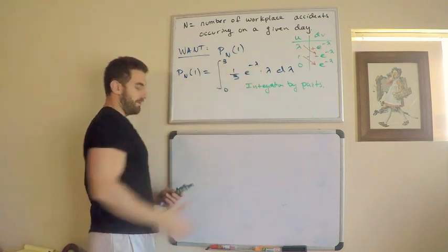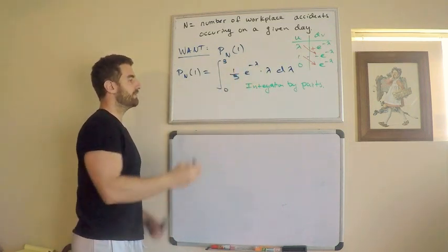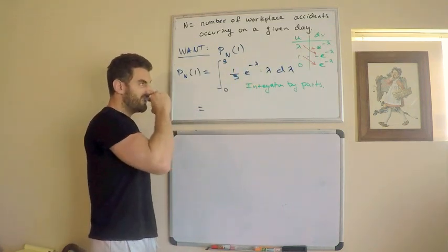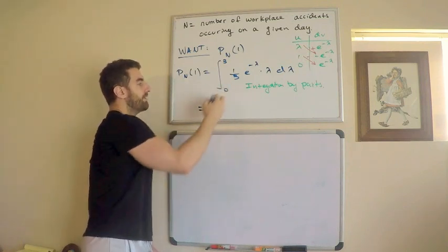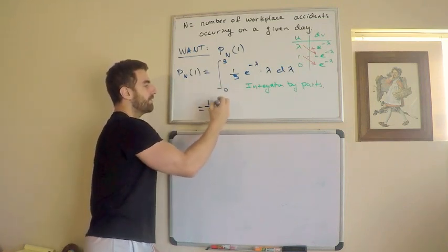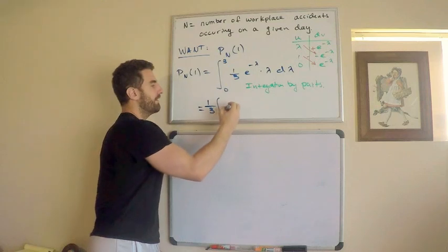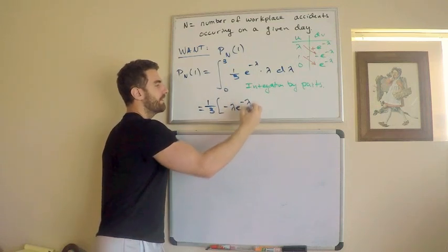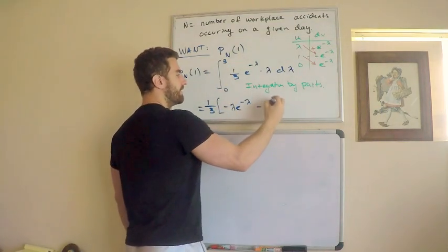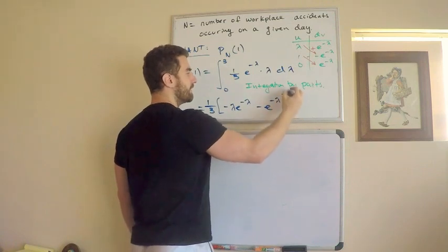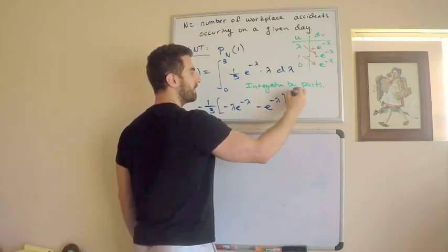And I'll just copy that down and I'm pretty much good to go. So this is equal to, this is equal to, the one-third can come out, just a constant. So one-third times quantity, negative lambda e to the negative lambda, minus e to the negative lambda, going from 0 to 3.